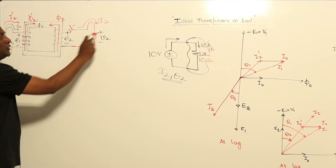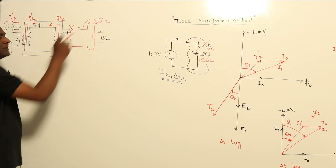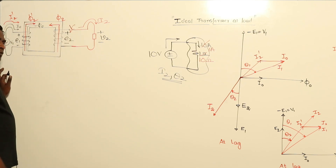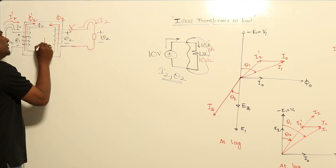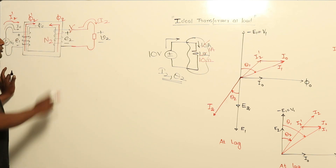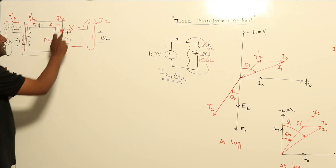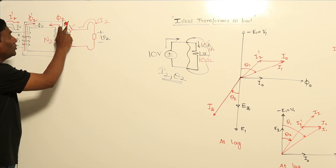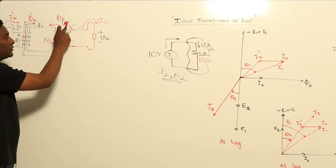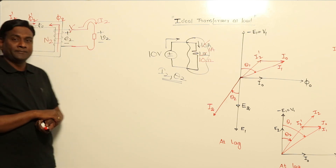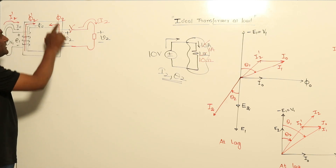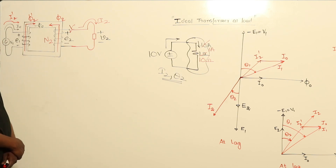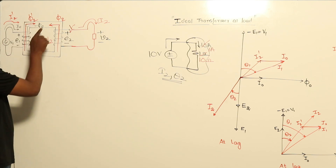When the switch is closed, there is already a voltage present, and a path is provided for current to flow. Whenever electrical current flows, a magnetic field is produced. Because of I2 flowing through N2, some flux φ2 will be produced. This φ2 will add to φ₀, meaning the net flux can be varied — φ2 is trying to disturb the flux distribution of the core.